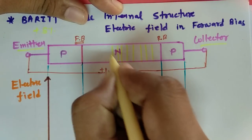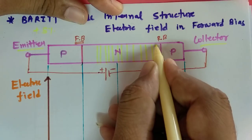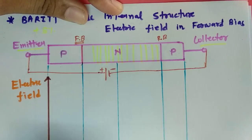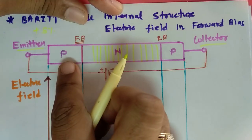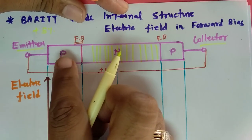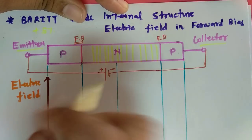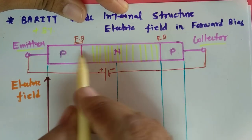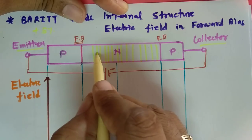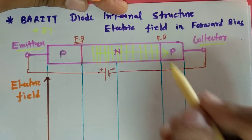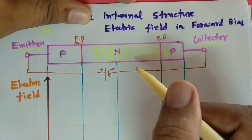As forward bias voltage is further increased, the depletion region keeps expanding toward the emitter. At a certain voltage, punch-through occurs — the positive holes present in the emitter get injected into the collector terminal, punching through the collector. This punch-through effect is what causes conduction in the Barrier Diode.